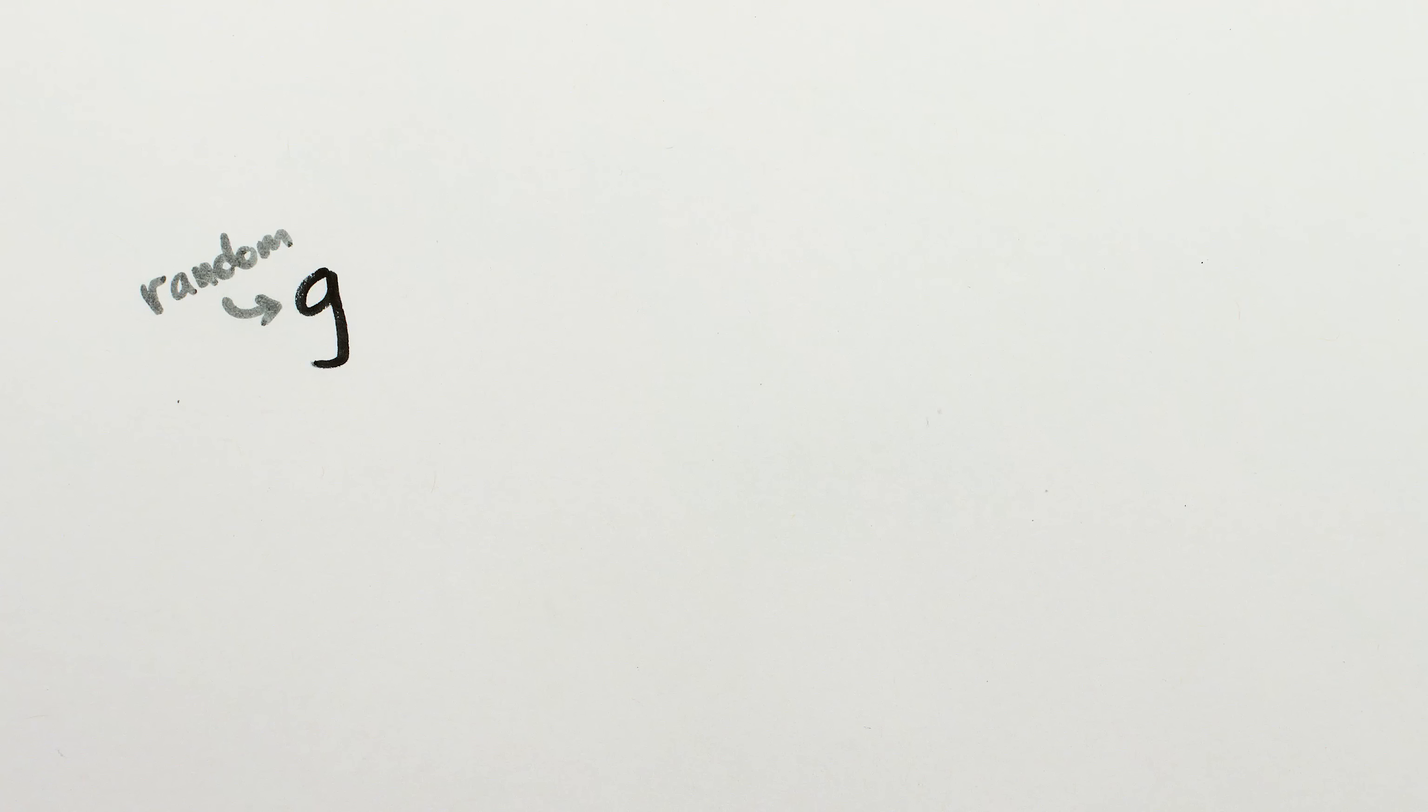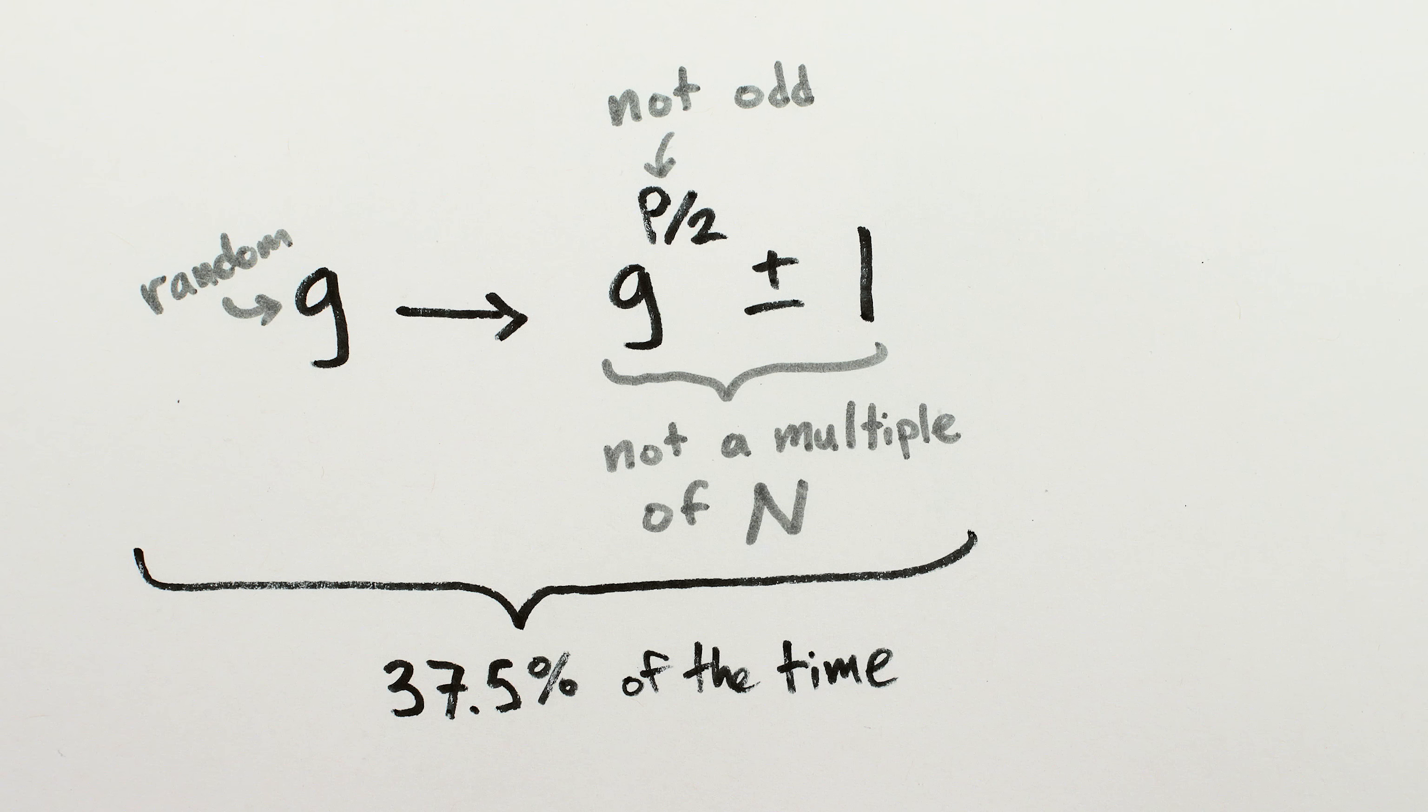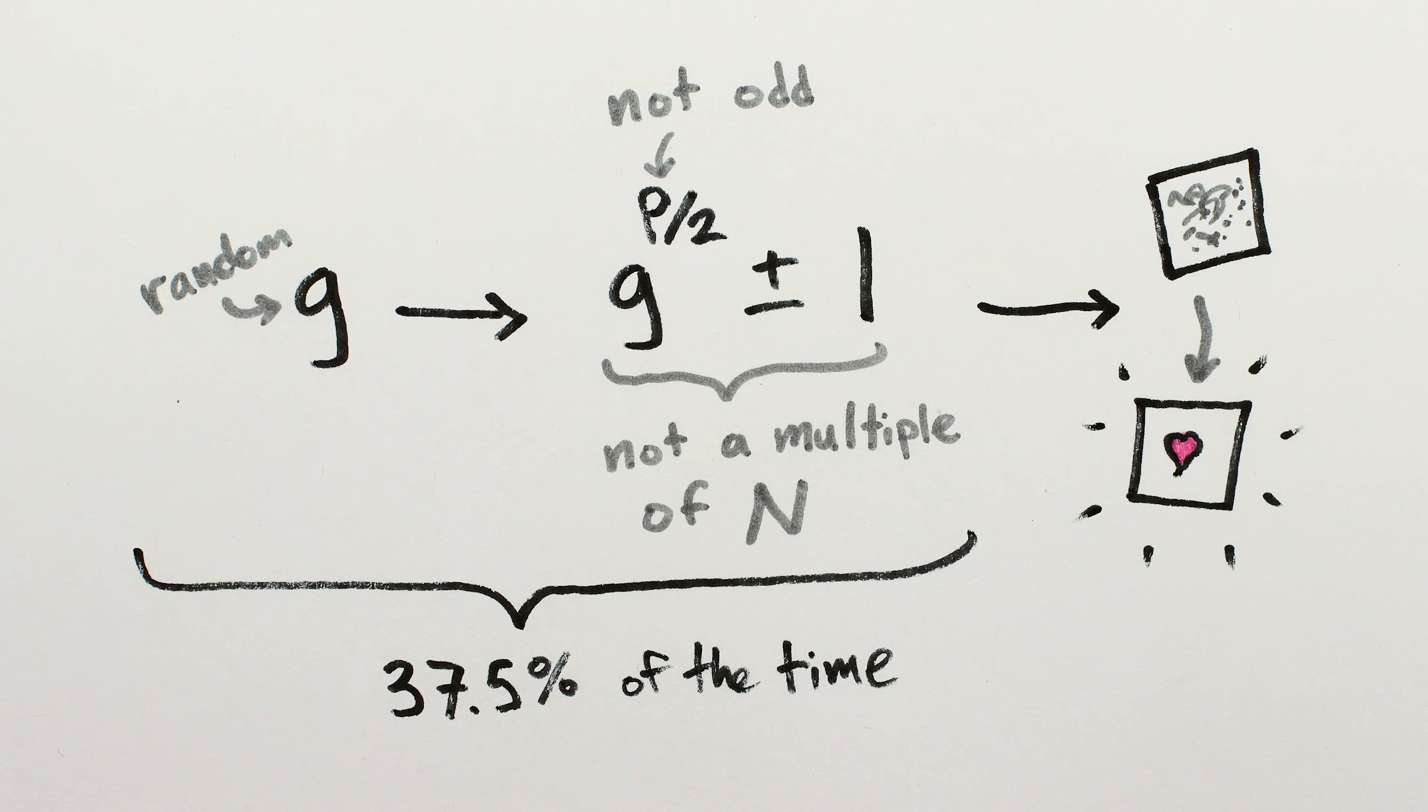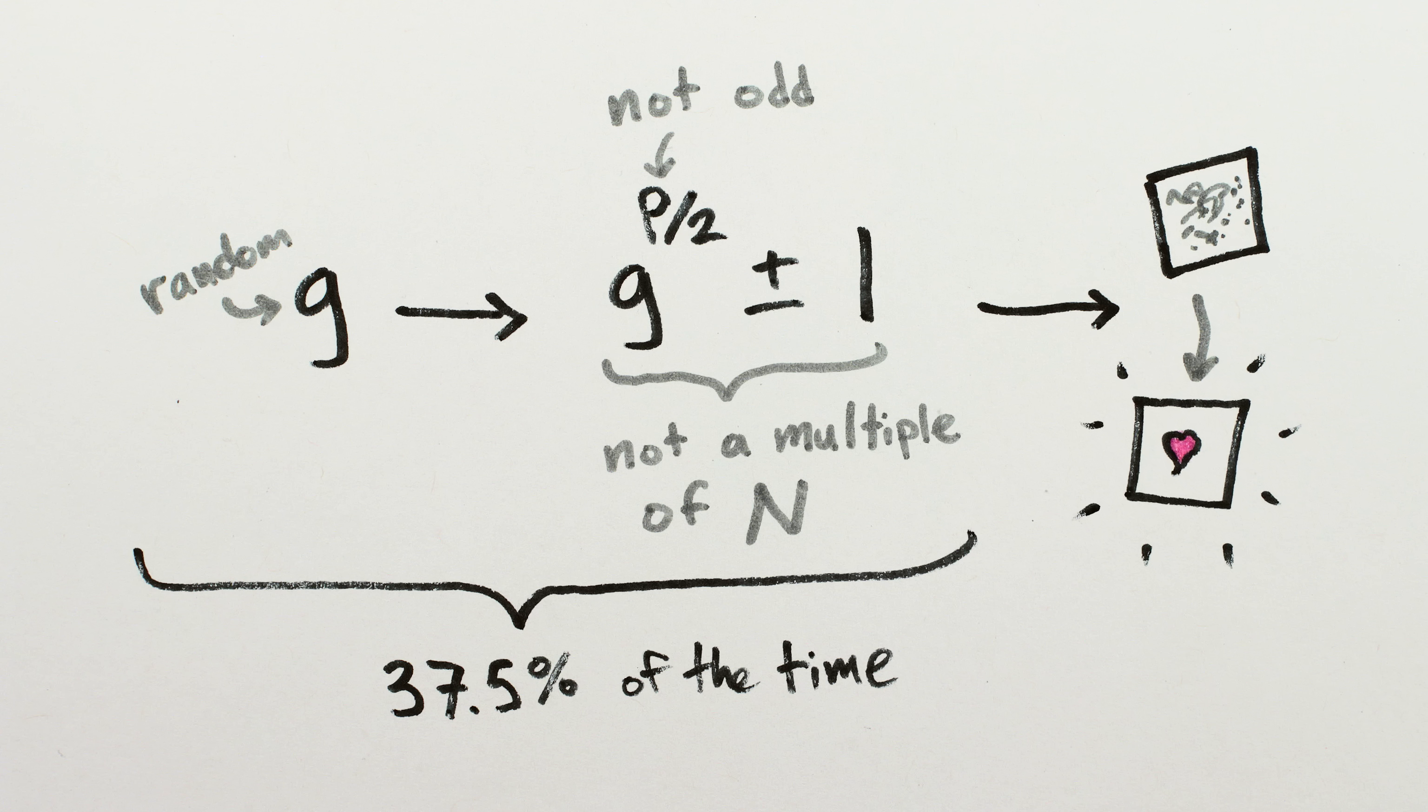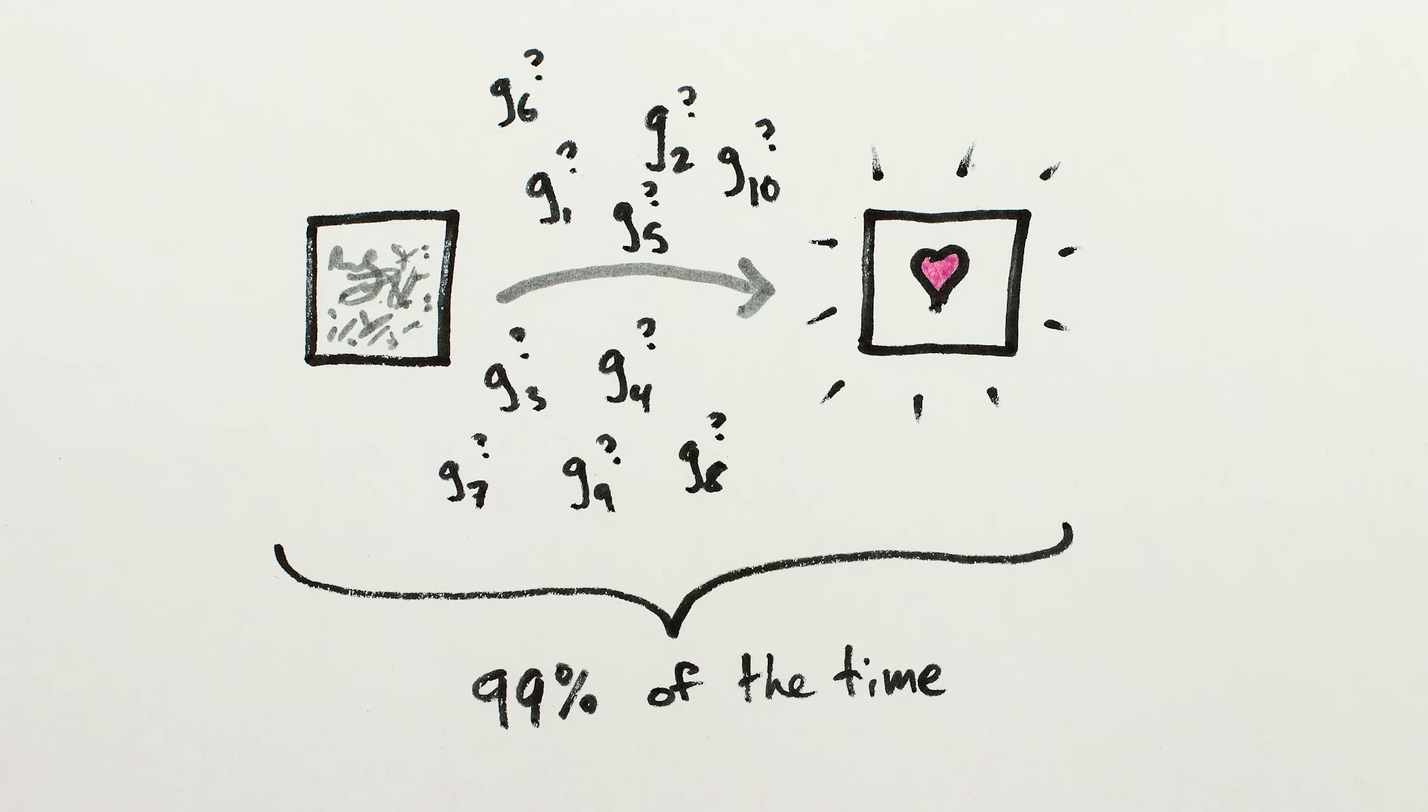However, for a random starting guess, it turns out that at least 3 eighths of the time neither of these problems happens, and g to the p over 2 plus or minus 1 does generate guesses that share factors with n and break the encryption. This is worth repeating. For any initial guess that we make, at least 37.5% of the time, our guess to the power of p over 2 plus or minus 1 will lead to a factor of n, decrypting the garbled message. Which means we're 99% likely to break the encryption with fewer than 10 guesses.